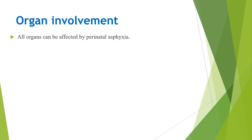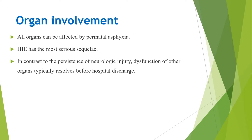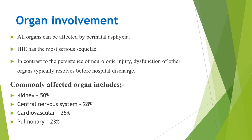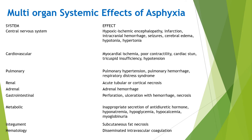When we see organ involvement, all organs can be affected by perinatal asphyxia. Hypoxic ischemic encephalopathy has the most serious sequelae — even though every organ is affected, insult to the brain is more permanent and may last for a prolonged period. In contrast to the persistence of neurologic injury, dysfunction of other organs typically resolves before hospital discharge. The most commonly affected organ is the kidney, followed by the CNS, then cardiovascular, and then pulmonary.